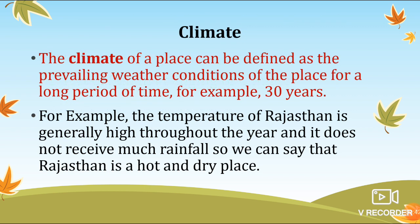As we discussed in the previous video, weather is the condition that changes very frequently — it may change within one hour, one day, a few days, or a month. But today we are going to discuss climate, which is different. Here we are considering a longer duration. The climate of a place can be defined as the prevailing weather conditions of a place for a longer period of time — for example, 20, 25, or 30 years, or even more.